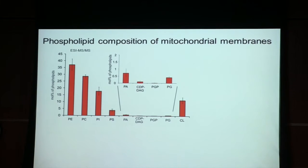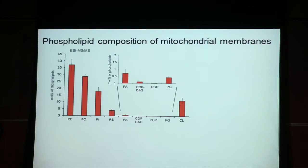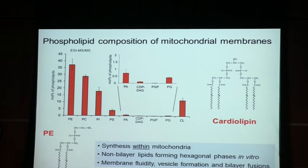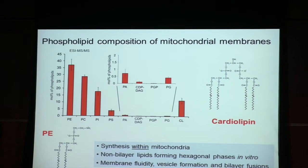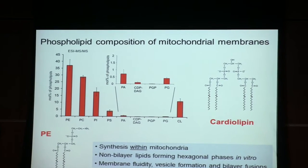Mitochondrial membranes have a very defined lipid composition like any other cellular membrane, and that is very important for the function and integrity of mitochondria. If you disturb it, mitochondrial function and integrity is also disturbed. The lipid composition is common to other cellular membranes in that PE — phosphatidylethanolamine — and PC are very abundant phospholipids in mitochondrial membranes.